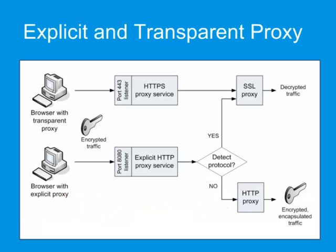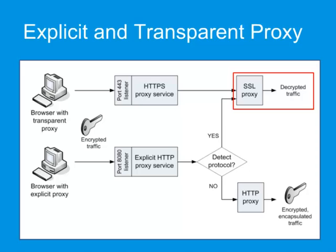With a client configured for transparent proxy connection, the ProxySG listens on port 443 for the incoming traffic, which is then handed to the HTTPS proxy service and passed to the SSL proxy. When the client uses an explicit proxy connection, the traffic arrives on port 8080, which causes it to be intercepted by a listener on the explicit HTTP proxy service.